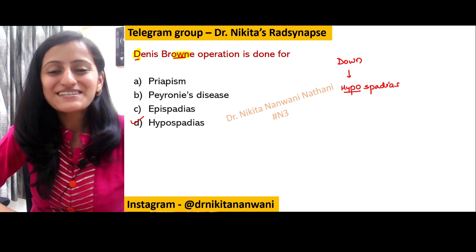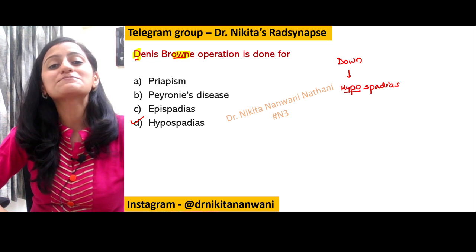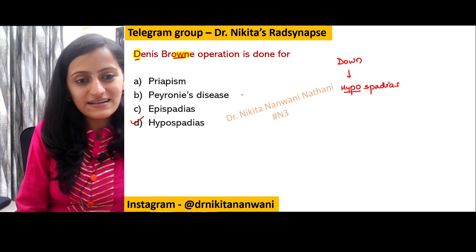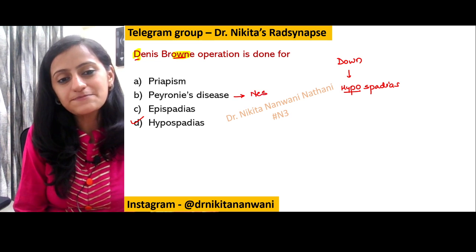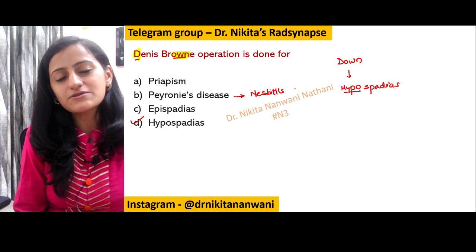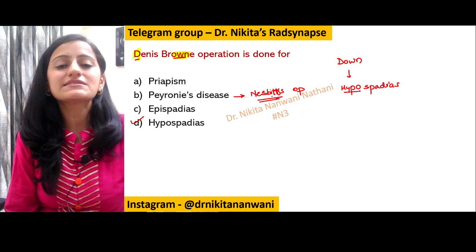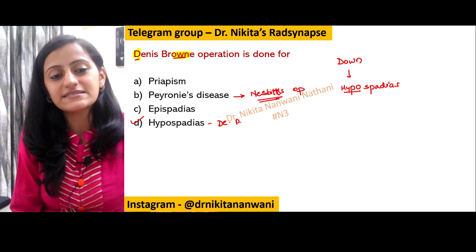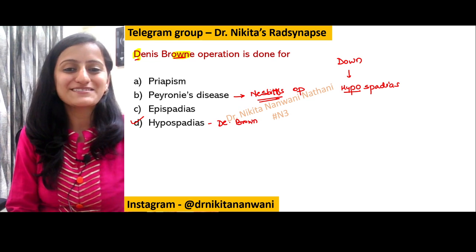There is also a Dennis Brown splint — let me know in the comments what the Dennis Brown splint is used for. Another important point: for Peyronie's disease, we do the Nesbitt operation. So remember — Nesbitt operation is for Peyronie's, and Dennis Brown operation is for hypospadias.